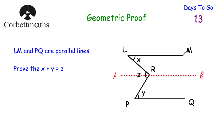If we look at angle X here, we have alternate angles — some people call them Z angles, but the proper name is alternate angles. So this angle is the same as the angle at R, meaning that angle equals X. And looking further down, because PQ and AB are parallel, if this is angle Y, then this angle at R is also Y. So X plus Y equals Z.